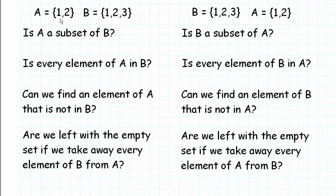What if we have A as the set containing the elements 1 and 2, and B as the set containing the elements 1, 2, and 3? Is A a subset of B? Well, to answer that question, we need to answer this: is every element of A in B? Well, 1 is an element in A, and 1 is also an element in B. We see that 2 is an element of A, and 2 is also an element in B. Every element in A is also an element of B, and so therefore we conclude that yes, A is a subset of B.